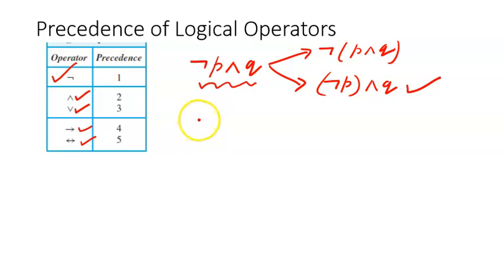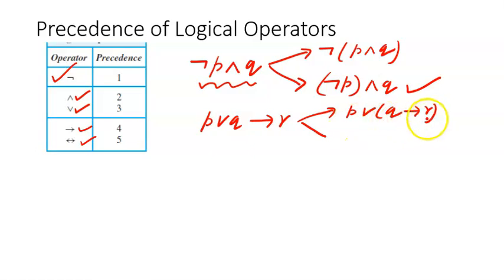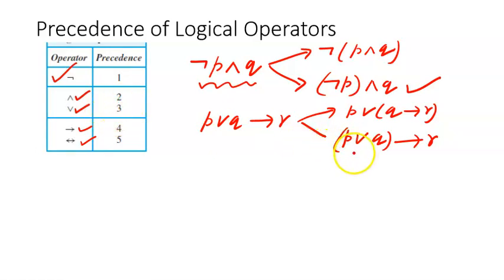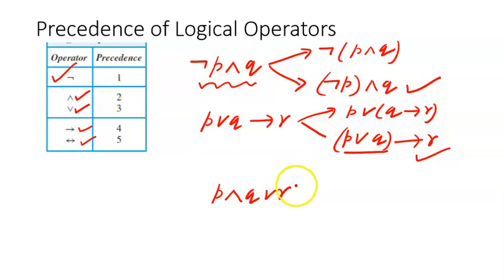Let us look at more examples. If we write P or Q implies R, the two possibilities are: first evaluate Q implies R and compose with P, or first evaluate P or Q and then imply R. Since or has higher precedence than implies, we take P or Q first, then implies R. Similarly, for P and Q or R, since and has higher precedence, we evaluate P and Q first, then or R. Precedence defines how to evaluate expressions in the absence of brackets.